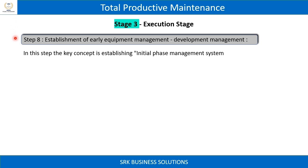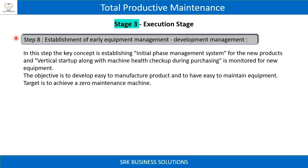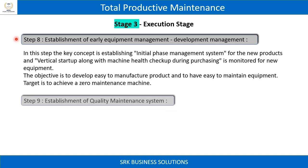Step 8: Establishment of early equipment management. The key concept is establishing an initial phase management system for new products and vertical startup, along with machine health checkup during purchasing, monitored for new equipment. The objective is to develop easy-to-manufacture products and easy-to-maintain equipment, with a target of achieving a zero-maintenance machine.